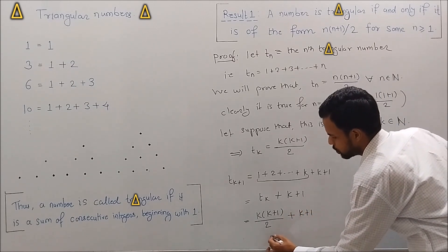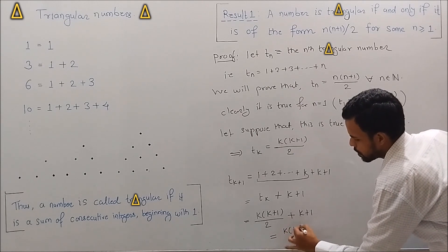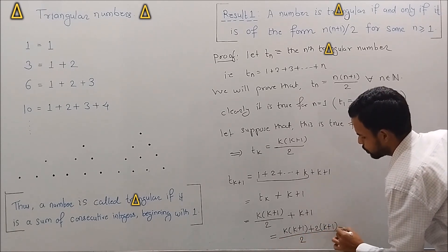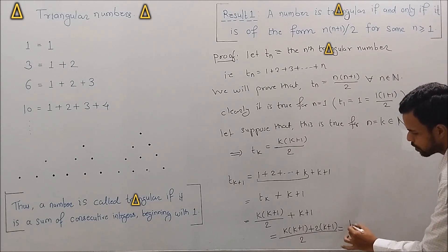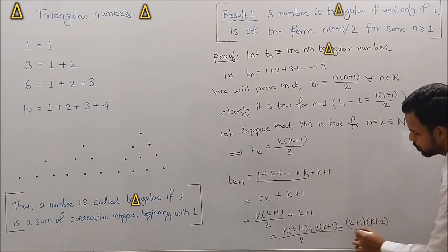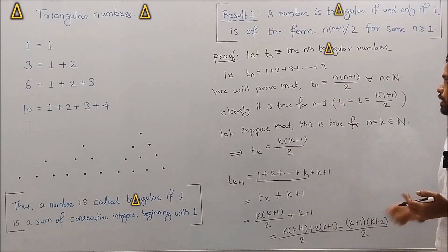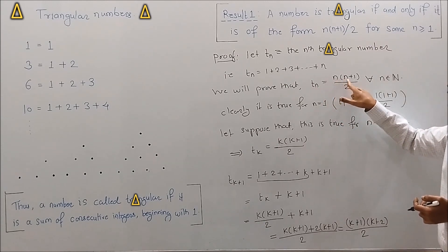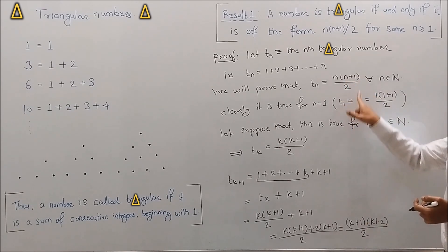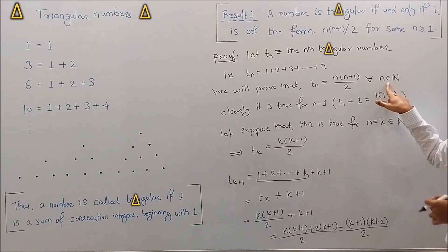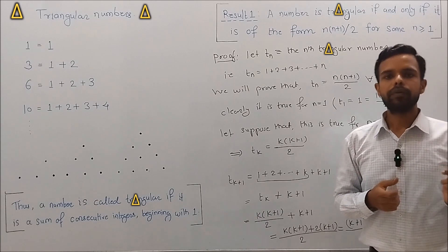So T_{k+1} = k(k+1)/2 + (k+1) = (k+1)(k+2)/2, taking (k+1) as common. We can see that the result holds true for n = k+1 as well, since we get (k+1)(k+2)/2, which matches the formula. By mathematical induction, the result holds true for every natural number n.